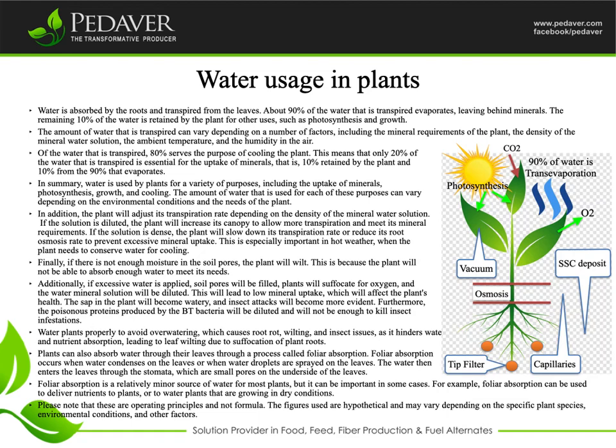In addition, the plant will adjust its transpiration rate depending on the density of the mineral water solution. If the solution is diluted, the plant will increase its canopy to allow more transpiration and meet its mineral requirements. If the solution is dense, the plant will slow down its transpiration rate or reduce its root osmosis rate to prevent excessive mineral uptake.